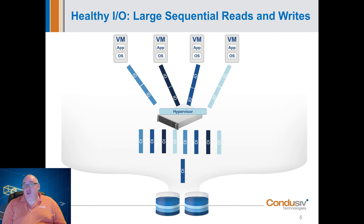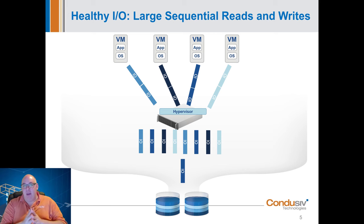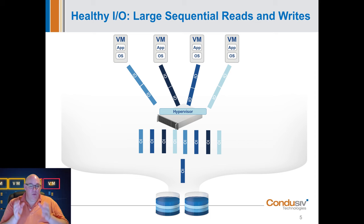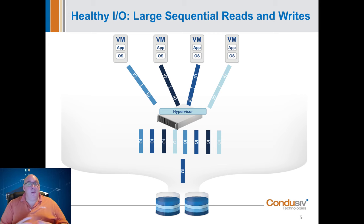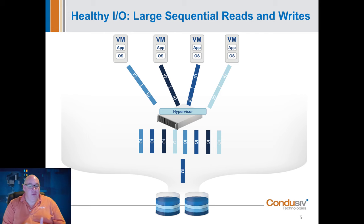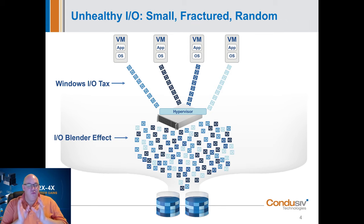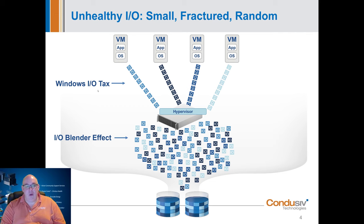What you want is far fewer IO packets moving between server and storage, with each IO packet carrying a much larger payload of data. When that storage traffic arrives at the storage controller, it arrives in much larger chunks, giving the storage controller the opportunity to create larger, more sequential stripes across its media using far fewer storage level operations. That's a lot more efficient. The performance penalty caused by these small fractured split IOs — we call it the Windows IO tax, a tax on your performance because of this inefficiency in Windows.